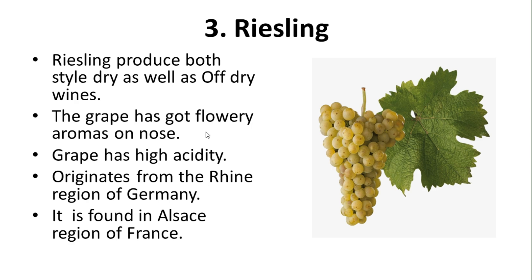Next is Riesling. It can produce both dry and off-dry style wines, depending on the sweetness — whether it has no residual sugar or a little sweetness. The grape has a flowery aroma on the nose and high acidity. All white grapes have high acidity, which is their character. Acidity is necessary for the refreshing quality — just like adding lemon to water makes it more refreshing. This is the difference acidity makes. Acidity brings the refreshing quality.